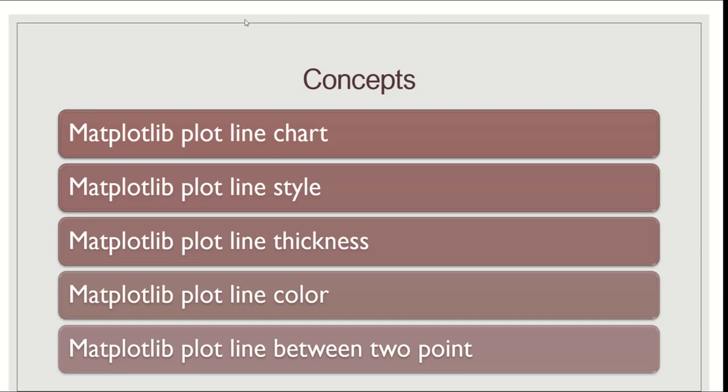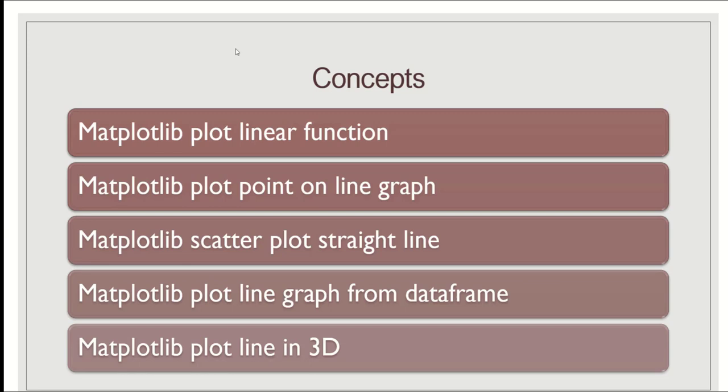First we will understand what is a line chart. Then we will learn how to change the style, thickness, and color of a line chart. We will also learn to plot a line between two points, understand what is a linear function and how to plot it, plot a point on a line graph, plot a straight line on a scatter graph, plot a line graph from a data frame, and finally plot a line in three dimensions.